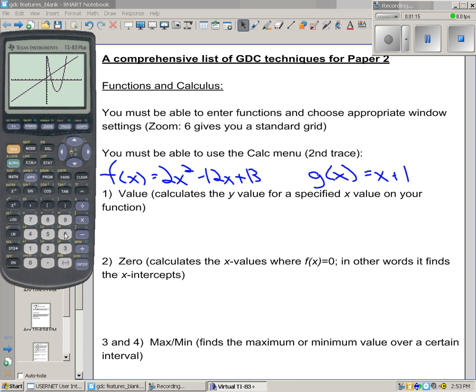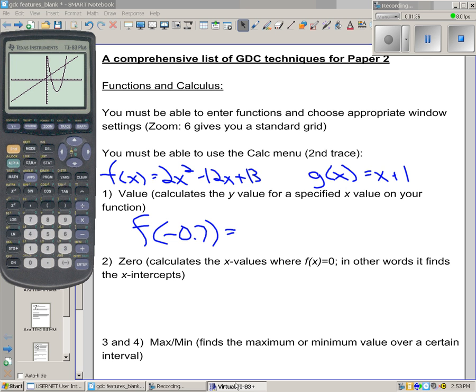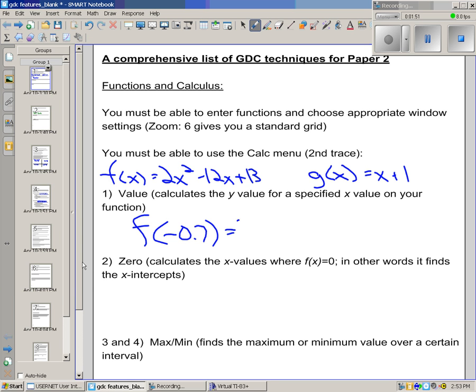Not surprisingly, we have a parabola and we have a linear graph with a slope of 1 and a y-intercept of 1. If we wanted to say find f at negative 0.7, it might be a pain to actually put it into this function and figure out what negative 0.7 squared is and so on. We certainly could do it or we can just go to the value. So second, calc, I go for value and I just look at what happens at negative 0.7 on my first function. And it tells me that I get a y-value of 22.38, which of course we can write exactly as 22.38 or we can give to 3 sig figs as 22.4.